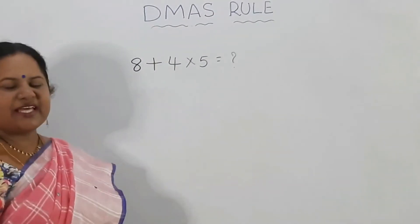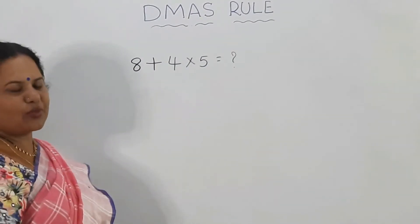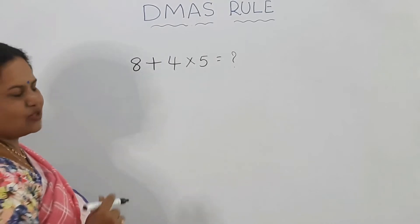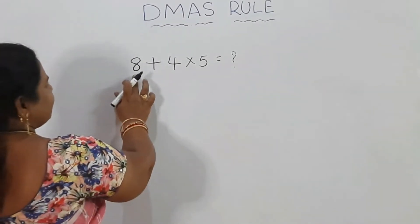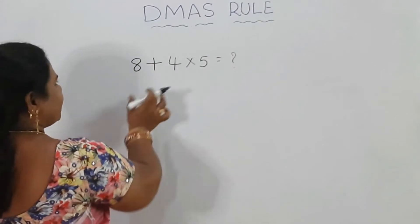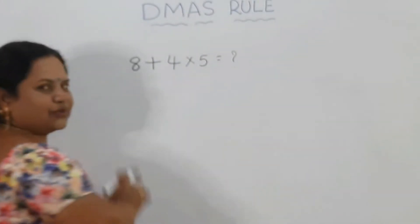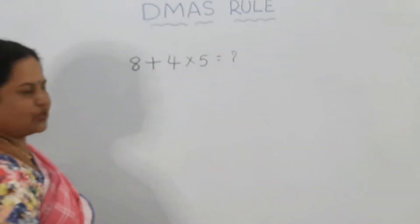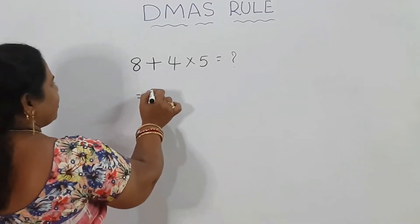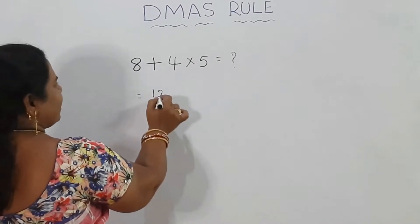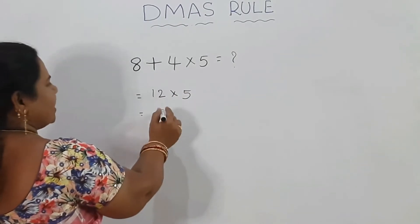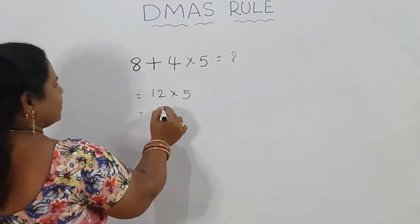Look here. Here we have a small problem. Let's solve this problem. First, here is 8 plus 4 into 5. We will apply this problem: 8 plus 4 into 5. What is 12 into 5? 60.